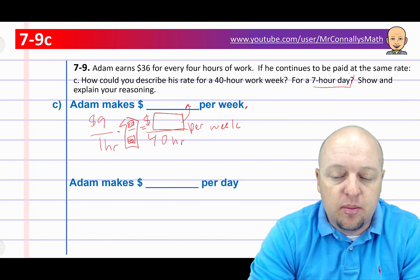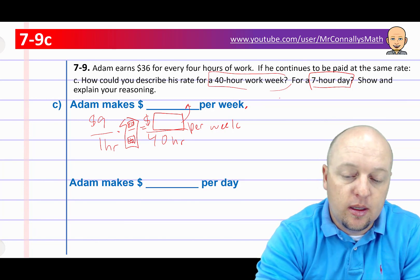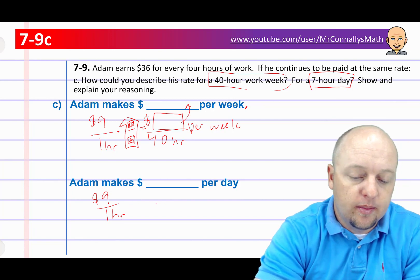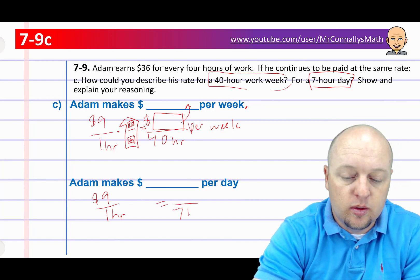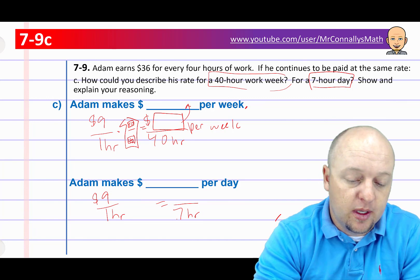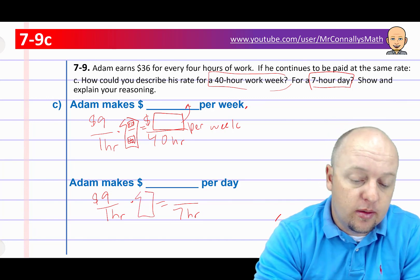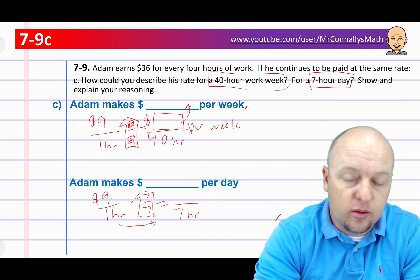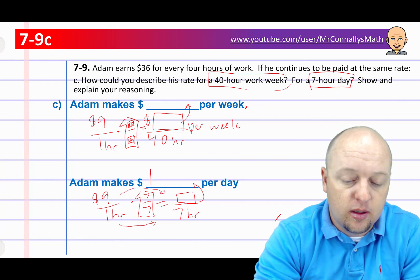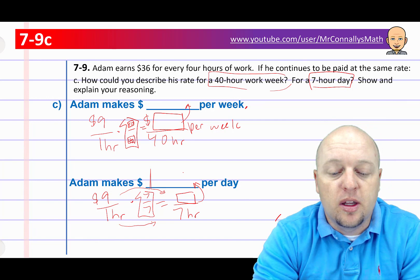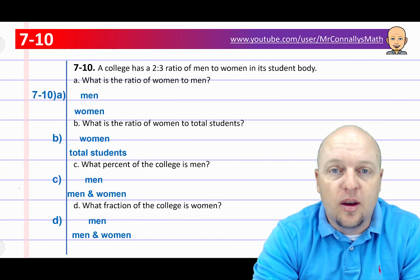Next part: how much does he make per day if it's a 7-hour day? We know it's $9 per one hour, and we know it's going to equal 7 hours. So we multiply by 7 over 7, because 1 times 7 equals 7 hours. That means 9 times 7 will give us our answer — that'll be how much he makes in a 7-hour workday. Pause if you need more time.